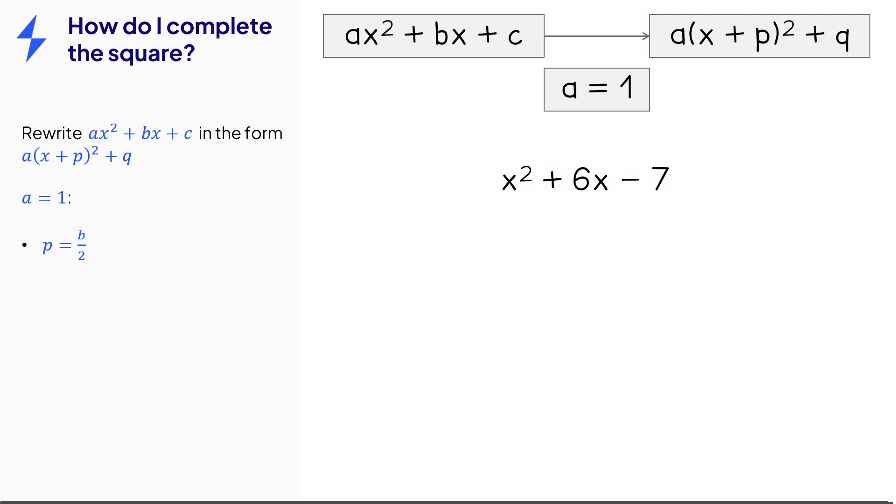We would half the coefficient in front of x to get 3. We will then write x plus 3 squared and then we'd also take away 3 squared. And the reason we take away the 3 squared is so that if we would simplify that expression we would be left with x squared plus 6x.